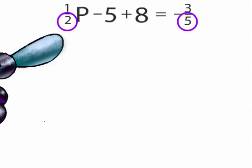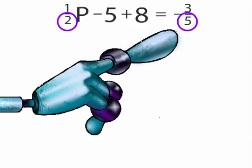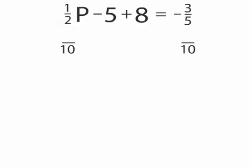The common denominator for 2 and 5 would be 10. 2 goes into 10 five times. 5 times 1 equals 5. On the other side, 5 goes into 10 two times. 2 times negative 3 equals negative 6.